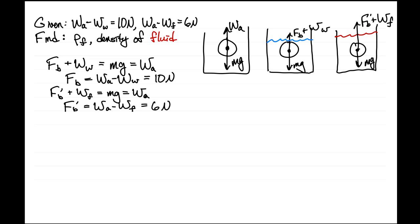Writing these buoyancy forces out: the buoyancy force in water is the volume times the density of the water times g, that's 10 newtons. In the other case, we have the density of the fluid times the volume of the object times g equals 6 newtons. We can divide these two equations.